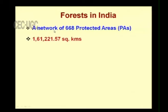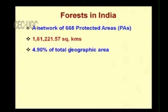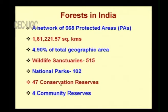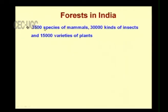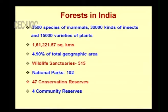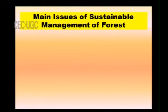Regarding forest coverage in India, there is a network of around 668 protected areas covering 161,221 square kilometers, representing 4.90 percent of total geographic area. There are 515 wildlife sanctuaries, 102 national parks, 47 conservation reserves, and 4 community reserves. Indian forestry hosts 3,500 species of mammals, 30,000 kinds of insects, and 15,000 varieties of plants.